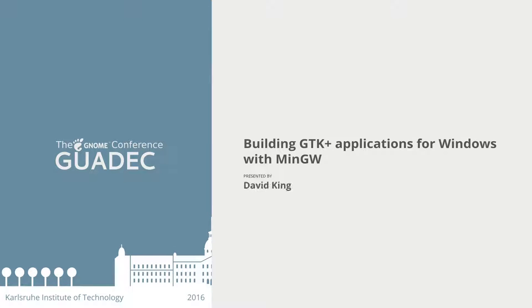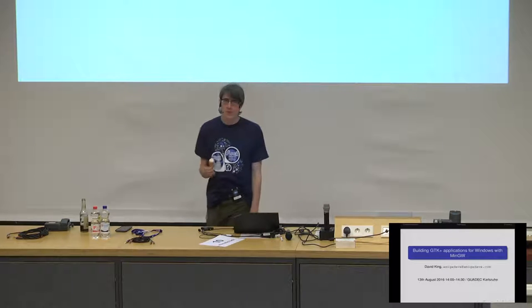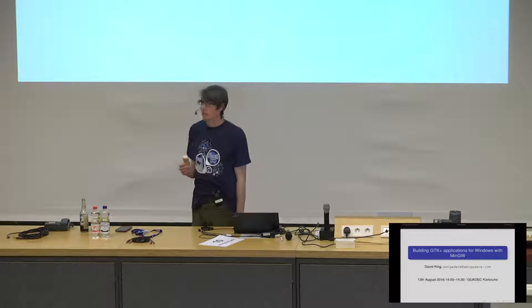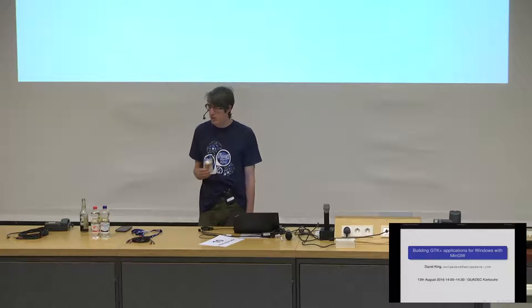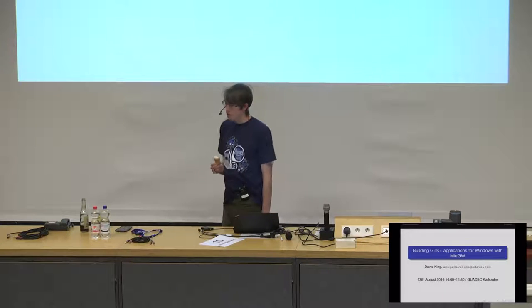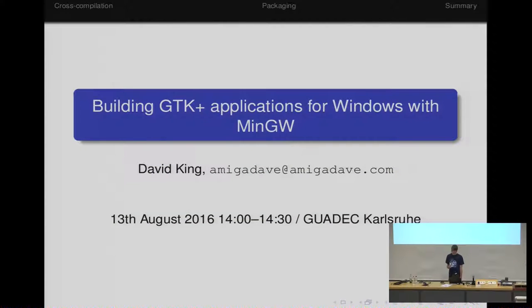How can you build a GNOME application for Windows? I'm David. I work for Red Hat in the desktop group doing GNOME things. As part of that, I do a fair bit of packaging. I have my own little hobby project — EasyTag — and I'm going to talk through how you might go about building a GNOME application for Windows, specifically cross-compiling from Linux using MingW, because that's what I've done, as well as many other people before me.